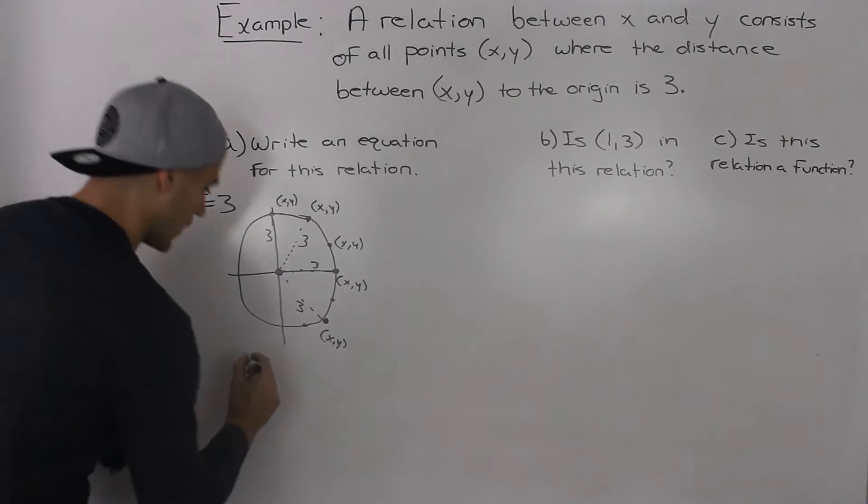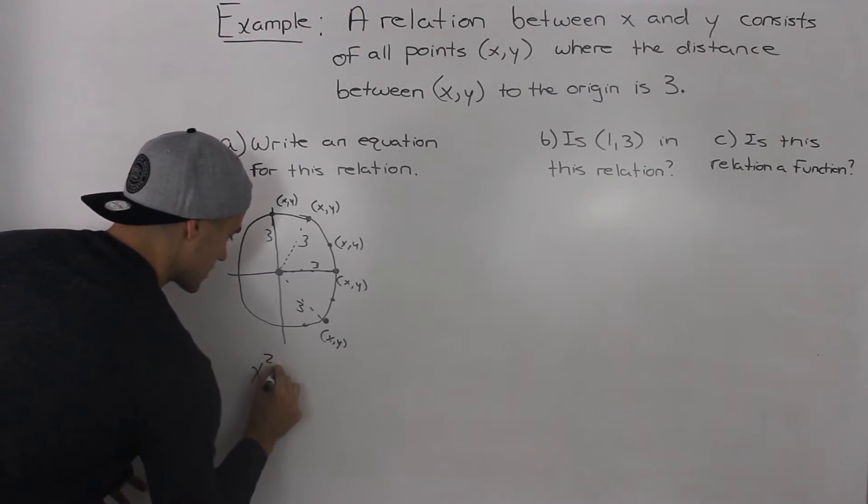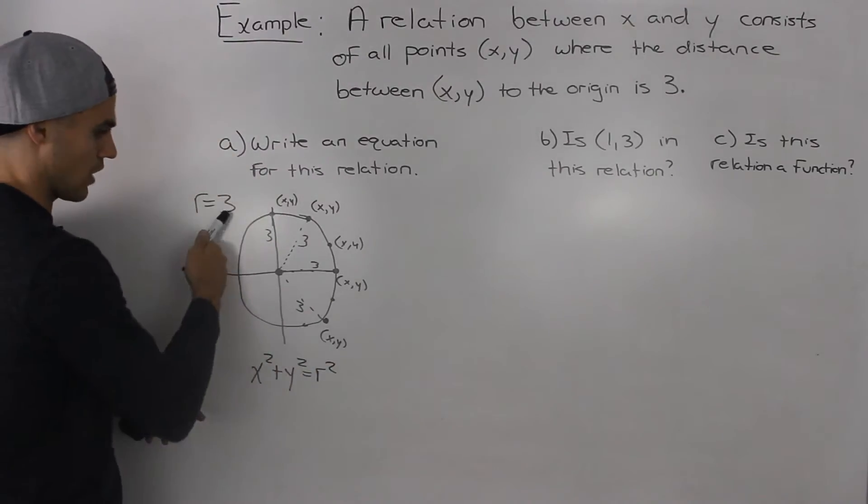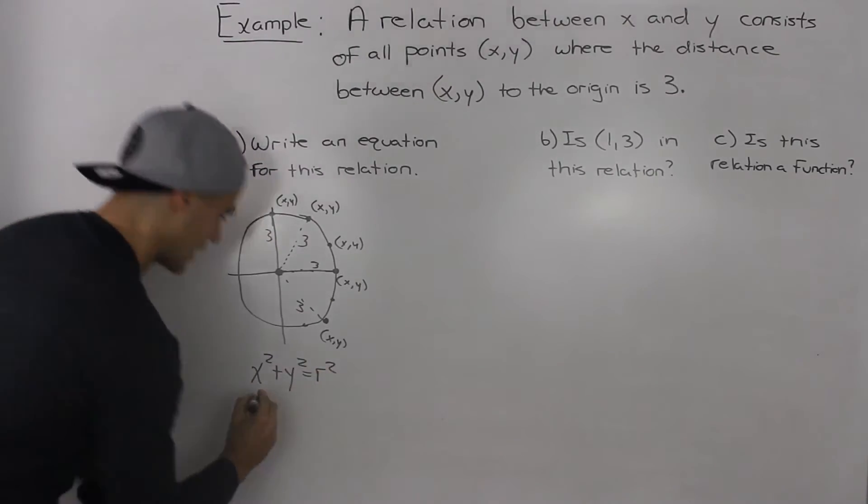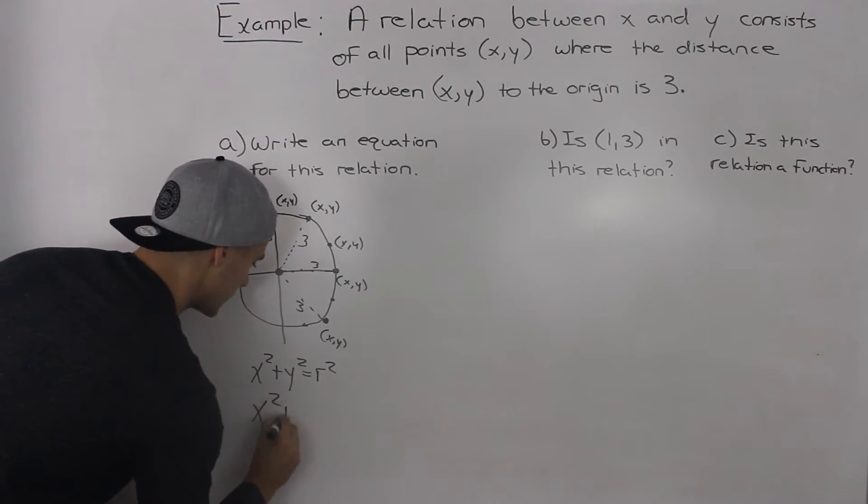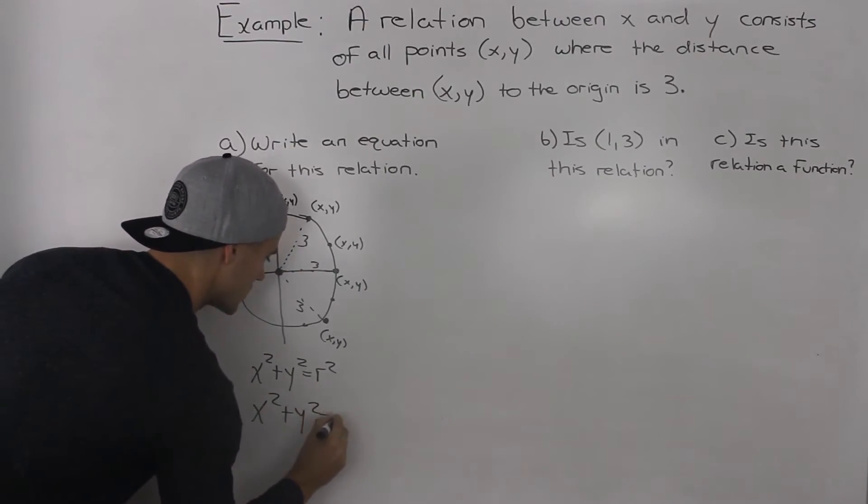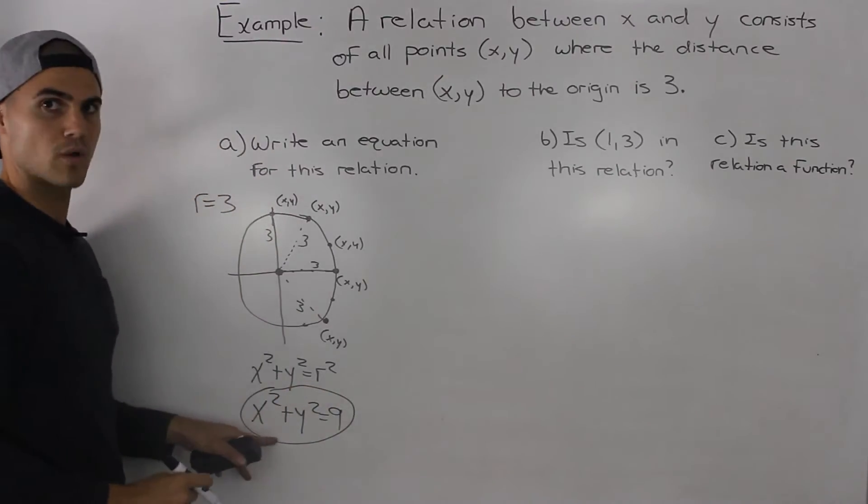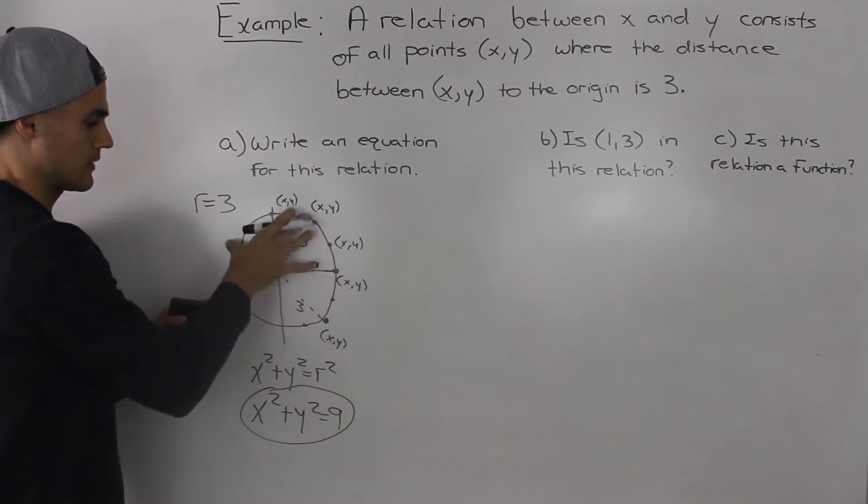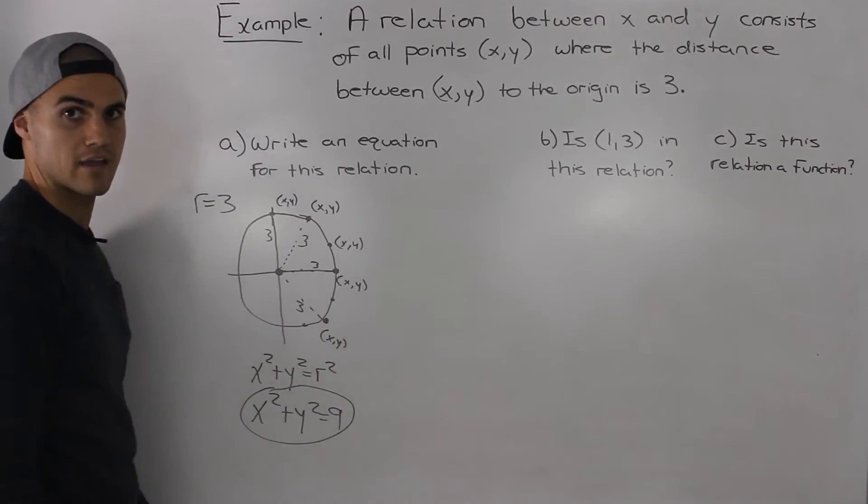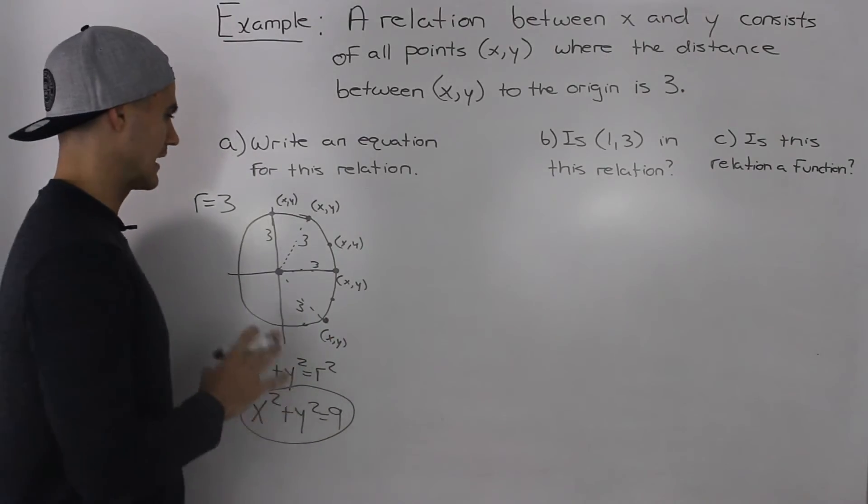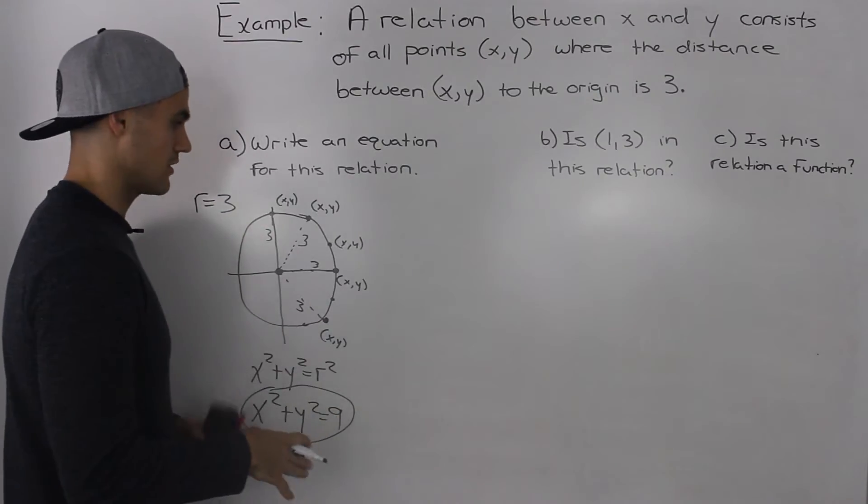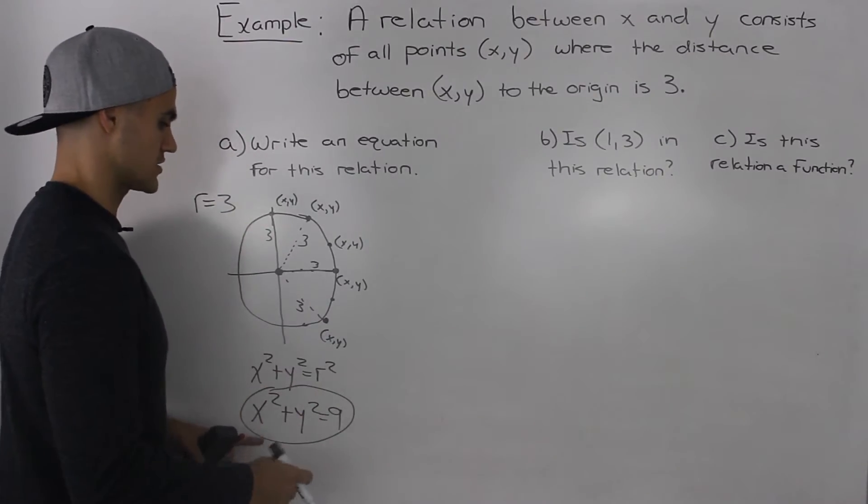So we know the equation of a circle is x² + y² = r². So if r is 3, then 3² is 9. So the equation of this relation is x² + y² = 9. So that's the first way we can show. We could show through a diagram and then realize that we're dealing with a circle.